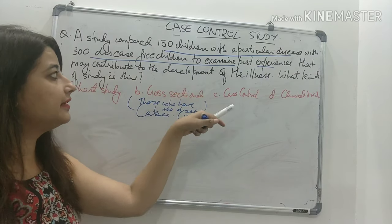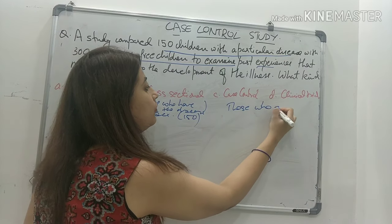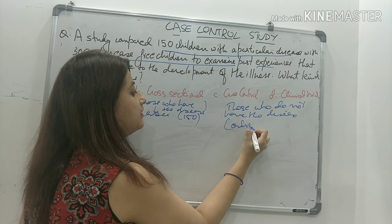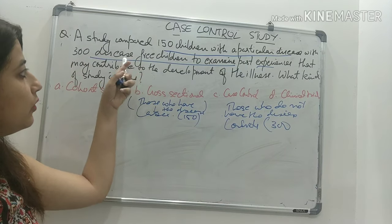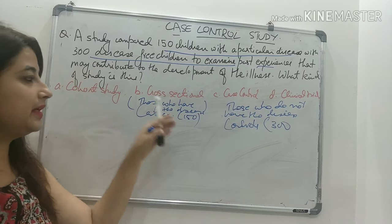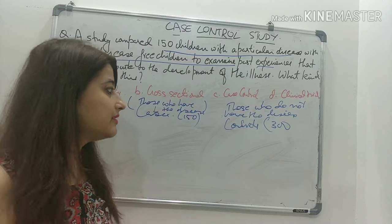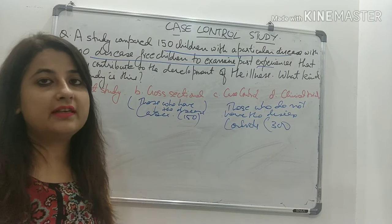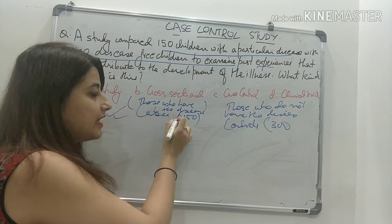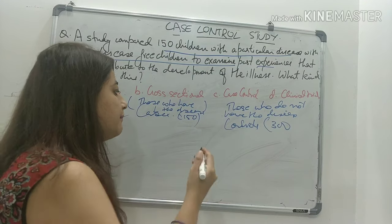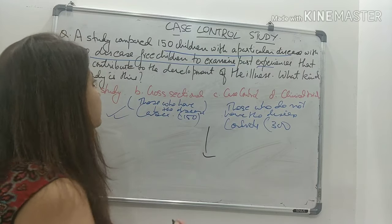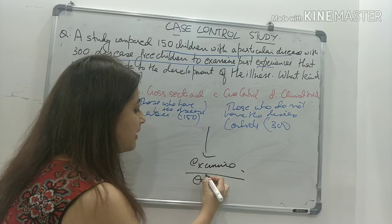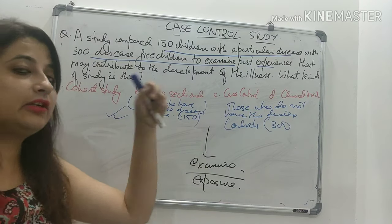The other group - 300 disease-free children - are those who do not have the disease. So they will become the controls. Now what are you doing? You are examining them for a particular exposure that may contribute to the development of the disease, which means you are starting a study with cases and controls and going back in time to see their past experience - to examine or determine an exposure that might have led to this outcome.